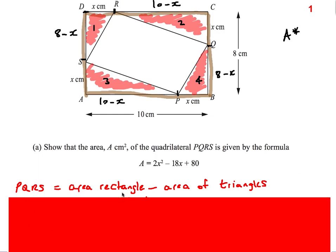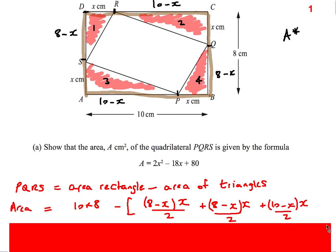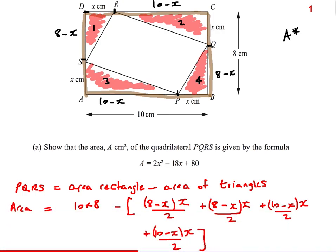So I'll say: area of PQRS equals area of the rectangle take away area of the triangles. The area of the rectangle is 10 times 8. For the triangles: I know this total length is 8 and this side is x, so the missing length is 8 minus x. This long length is 10 and this side is x, so this is 10 minus x. The same applies on the other sides: 8 minus x and 10 minus x. Triangle 1 is base times height divided by 2, so (8 - x) × x ÷ 2. Then there's another one: (10 - x) × x ÷ 2, and another (10 - x) × x ÷ 2. Those are the four triangles.